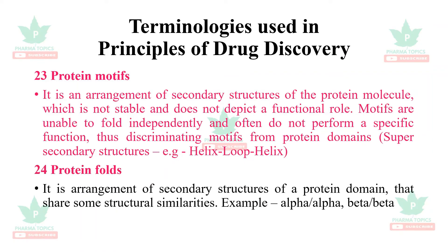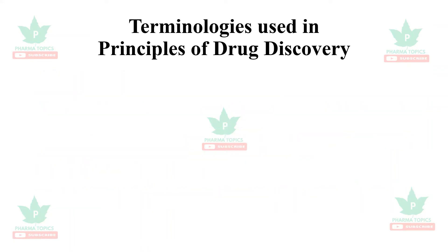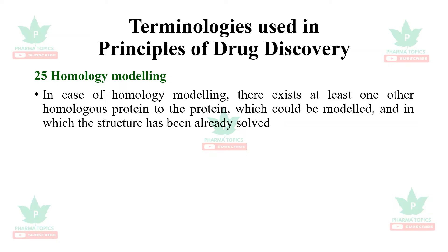Protein folds: the arrangement of secondary structures of a protein domain that share some structural similarities — for example, alpha-alpha, beta-beta. Next is homology modeling: in homology modeling, there exists at least one homologous protein to the protein being modeled, in which the structure has already been resolved.